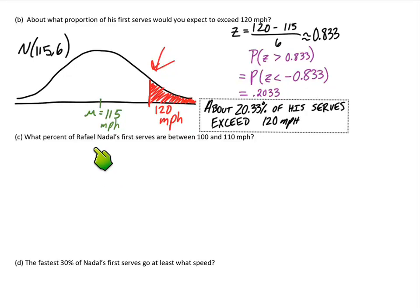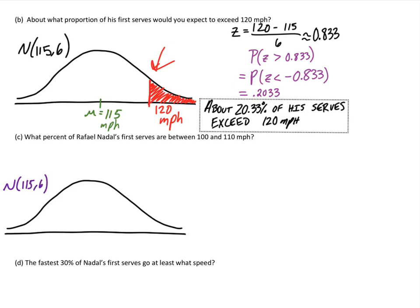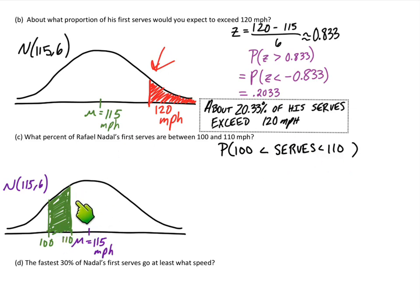Part C says: what percent of Rafael Nadal's first serves are between 100 and 110 miles per hour? Let's make our normal distribution again, put the label, mark off the mean smack dab in the middle, and then estimate boundaries along the x-axis number line where 100 and 110 might go. We'll draw vertical lines and shade that interval, representing the proportion of Nadal's serves between 100 and 110.